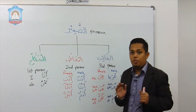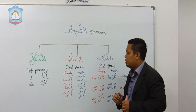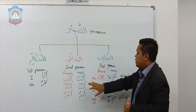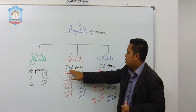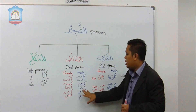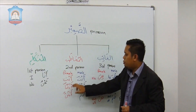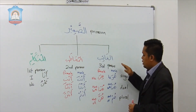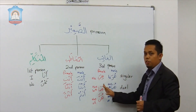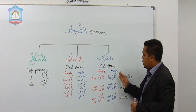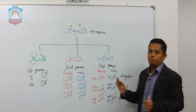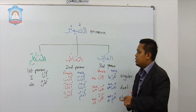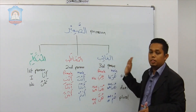All together, there are 14 pronouns in Arabic. Two for Al-Mutakallim — ana and nahnu. Six for Al-Mukhattab, the second person — three for male: anta, antuma, antum, and three for female: anti, antuma, antunna. And six for Al-Gha'ib, which is the third person — three for male and three for female. So all together, we have 14 pronouns in Arabic divided into first person, second person, and third person.